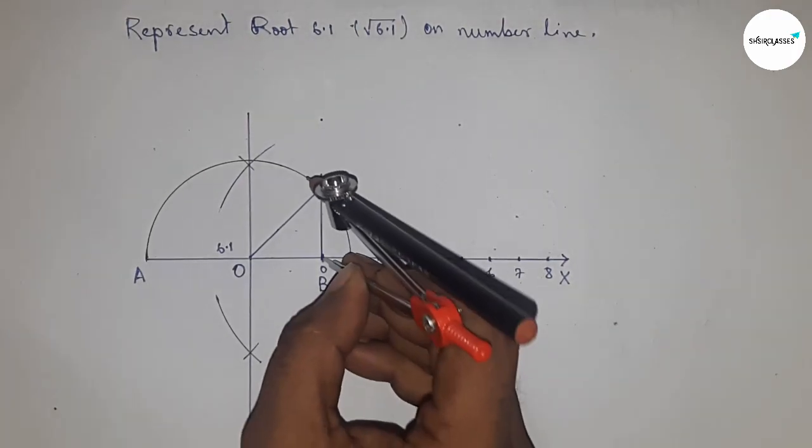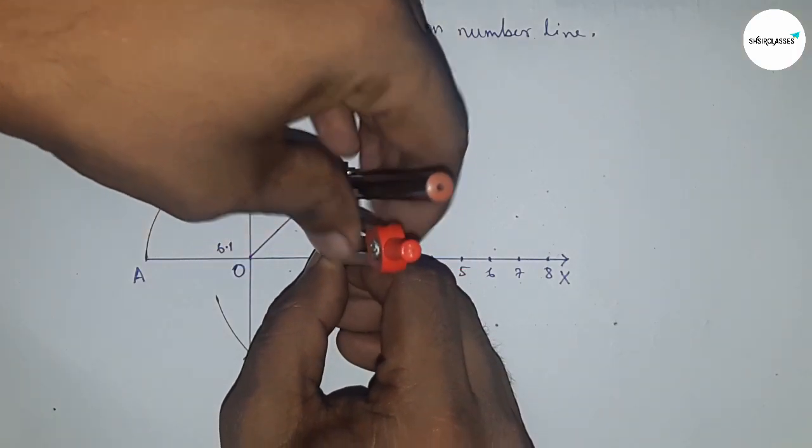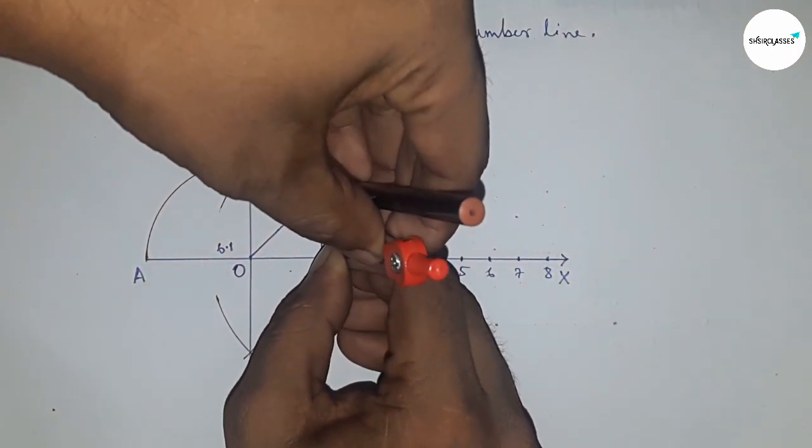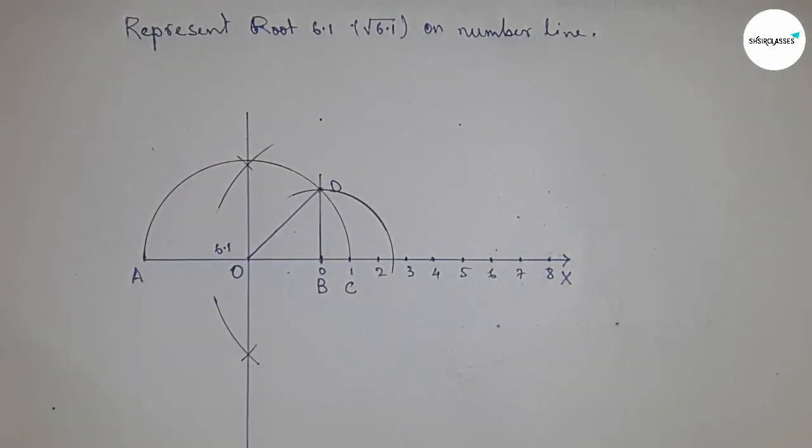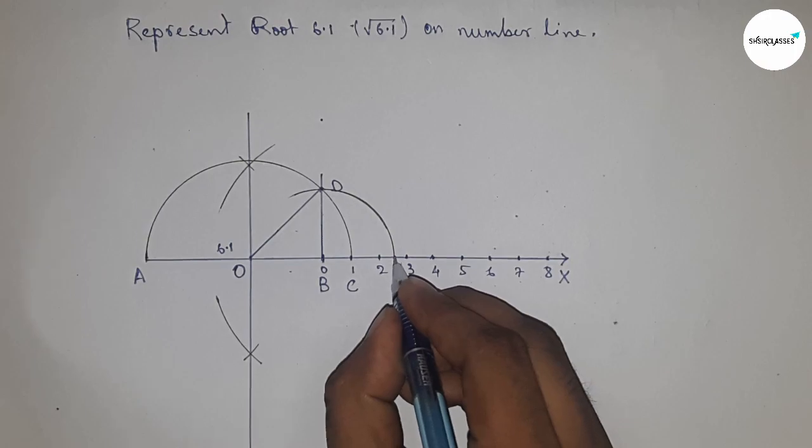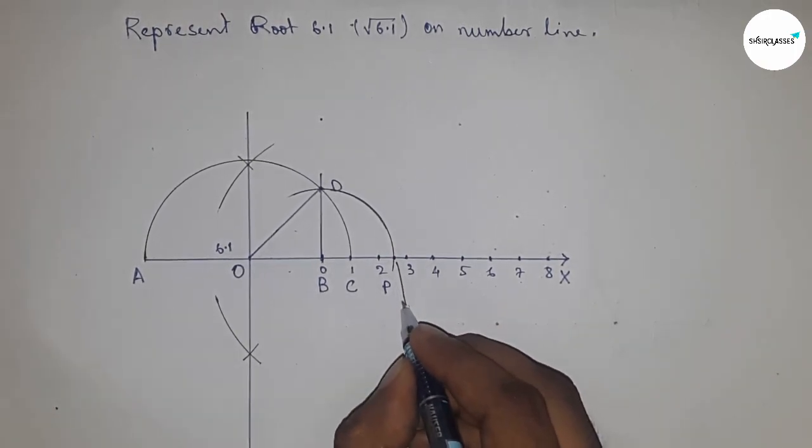Take BD by compass and draw an arc which meets the number line at a point P. And this is the representation of root 6.1 on the number line.